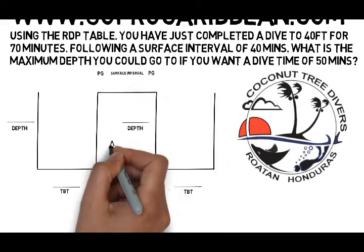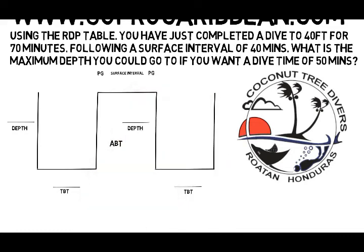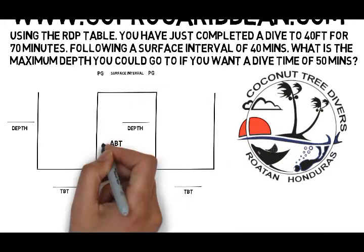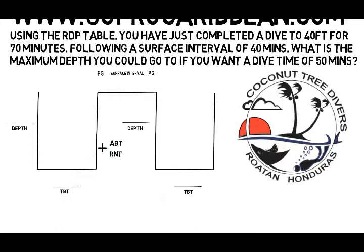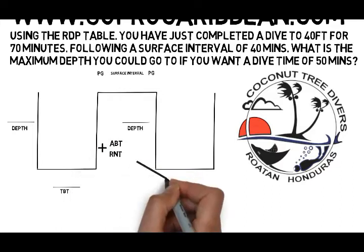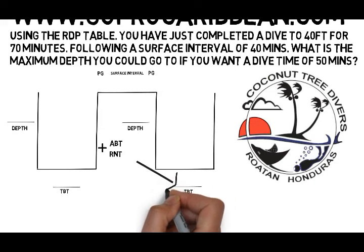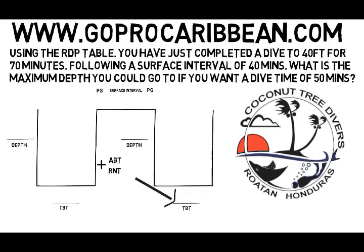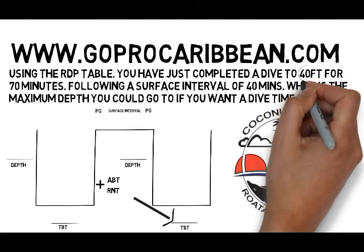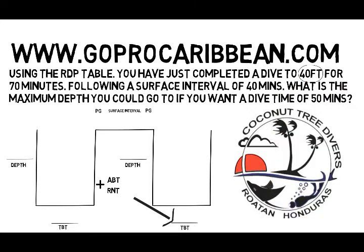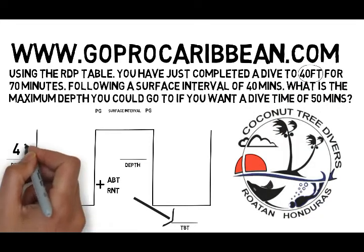As always, I'm going to lay out a diagram to neatly organize my workings. Because it's a table question I've got the ABT and RNT calculation in there, though this is another example of a question where it won't actually be required. So what we need to do is start from the left of the diagram and work towards the right, filling in the information we do have.